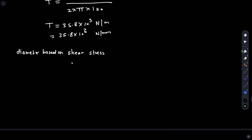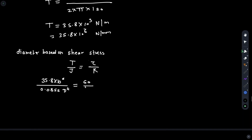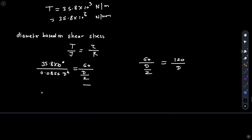For diameter based on shear stress, use T/J = τ/r. Substituting: 35.8×10⁶ / (0.0855D⁴) = 60 / (D/2). Simplifying the right-hand side: 60 divided by D/2 equals 120/D. Substituting into the equation gives 35.8×10⁶ / (0.0855D⁴) = 120/D.